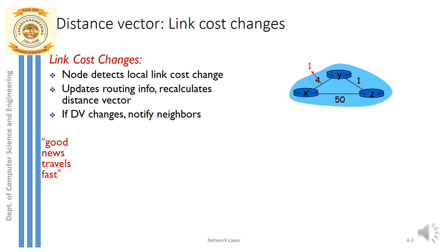What is distance vector? Distance vector is where every node calculates the least cost path from itself to the destination node. Whatever the distance vector it has calculated, that information will be circulated to all its neighboring nodes, so the neighboring nodes will get the information about the shortest distance.